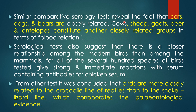Similar comparative serological tests reveal that cats, dogs, and bears are closely related. Cows, sheep, goats, deer, and antelopes constitute another closely related group in terms of blood relations. Serological tests also suggest that there is a close relationship among modern birds. All of several hundred species of birds tested give a strong and immediate reaction with the serum containing antibody for chicken serum.